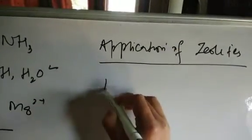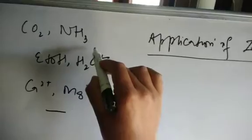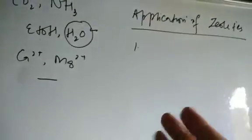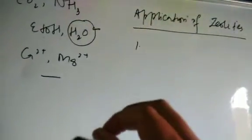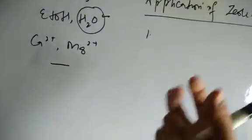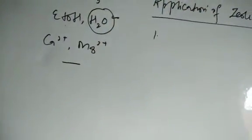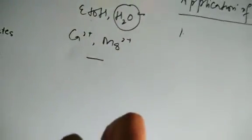Application number one: since zeolites can absorb water inside their pores, they are used to remove water from various sources. For example, solvents in the lab — like dichloromethane, ethyl acetate, and hexane — usually have some water content. We add zeolites as solid materials; since they are insoluble in organic solvents, they slowly absorb the water, effectively drying the solvents.